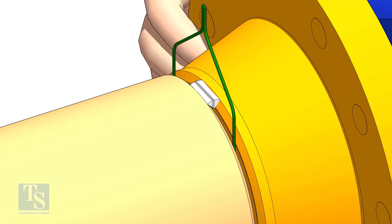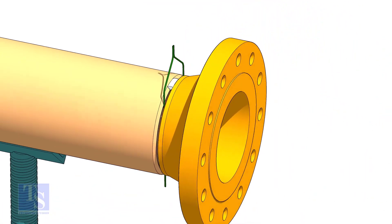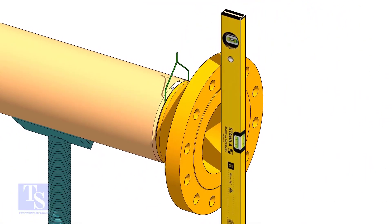Tack weld on the top side of the joint. Check the level of the flange vertically and tack weld on the bottom side of the joint.